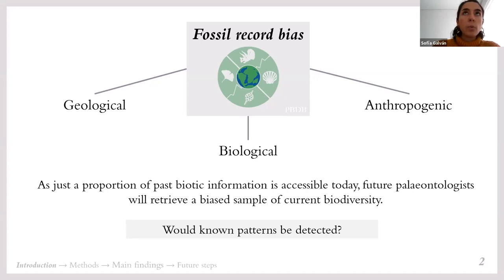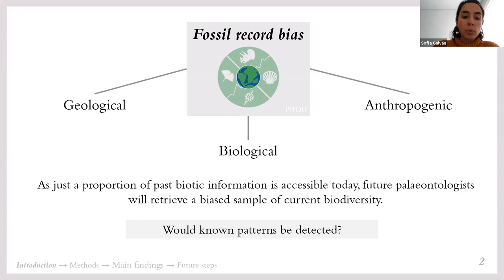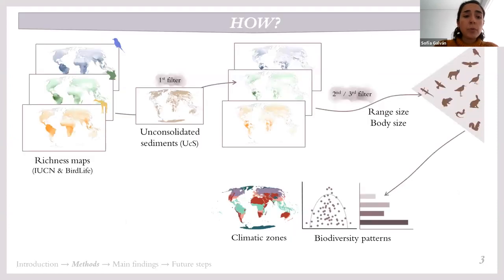We thought that, as just a fraction of past biotic information is accessible today, future paleontologists will retrieve as well a biased sample of current biodiversity. And we asked whether well-known patterns could be detected in the future. To test this, we are going to use current richness maps for mammals, amphibians, and birds.